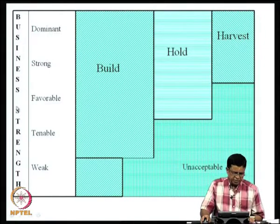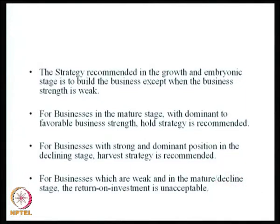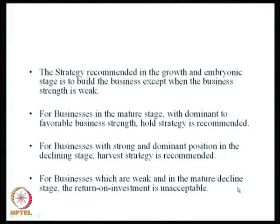Hold is where the product or product line is already a leader and you hold on to that position as far as possible. The main point is that the Arthur D. Little matrix looks at business strength along with the different stages of the PLC. The strategy recommended in the growth and embryonic stage is to build the business, except when business strength is weak. For businesses in the mature stage with dominant to favorable strength, hold strategy is recommended. For businesses with strong and dominant position in the declining stage, harvest strategy is recommended. For businesses which are weak and in the mature/decline stage, the return on investment is unacceptable and you must salvage as much value as possible.